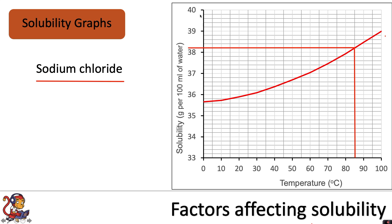You need to be able to work out the scale of an axis and work out that this particular graph is going up in 0.2s. So 0.2, 0.4, 0.6, 0.8 would take you up. So for this answer, at 85 degrees C, the solubility of sodium chloride is 38.2 grams per 100 mils of water. So much less than the potassium chloride we looked at.